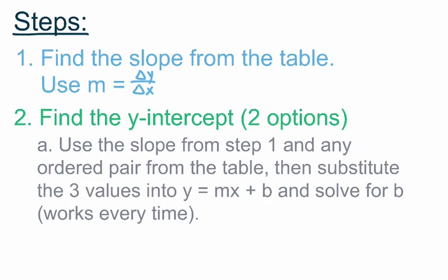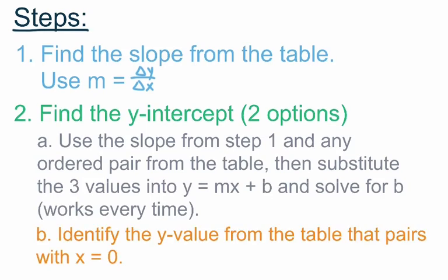Our y value goes in for y, our slope value goes in for m, and our x value goes in for x. We then solve for b to find the value for the y-intercept. That will work every time. The second option is a bit easier: simply identify the y value from the table that pairs with x equals 0. If there is a 0 in the x column, the y value paired with that 0 is the value for the y-intercept — no math involved. But if there is no 0, you have to go with the first option.